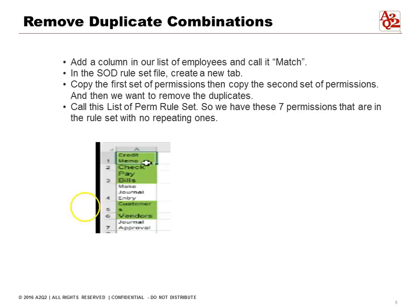The seven permissions are: credit memo, check, pay bill, make journal, customer, vendors, and approve journals. These are the seven permissions that don't repeat with anything else.